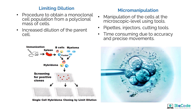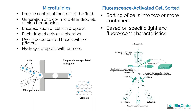Micromanipulation requires the use of pipettes, injectors, and cutting tools, making it very time consuming due to the precision and accuracy required. You must magnify and objectify cells under microscopy and then inject and cut them out. For example, extracting thousands of cells from a breast tissue sample makes micromanipulation impractical. Microfluidics, by contrast, offers very precise control of flow — making it far more scalable and practical for modern single cell sequencing workflows.